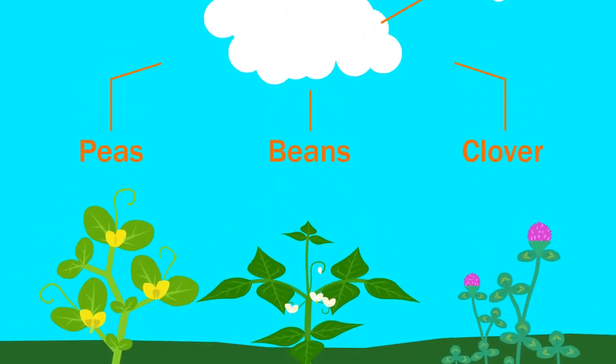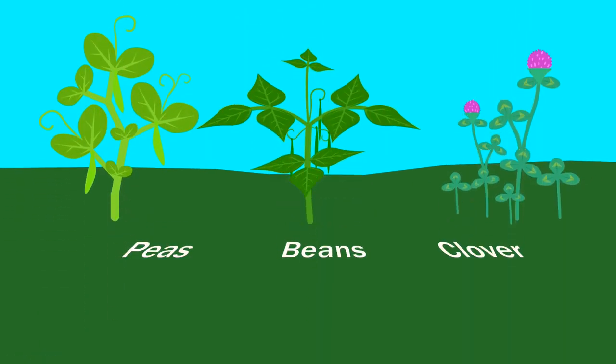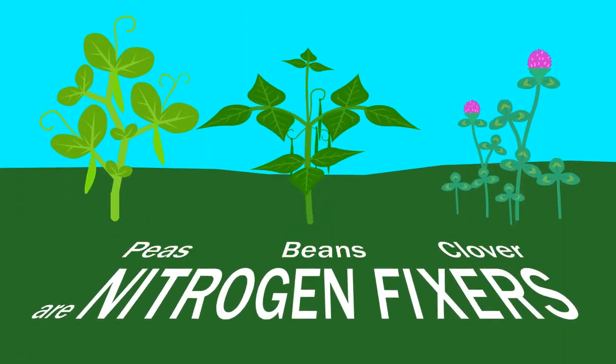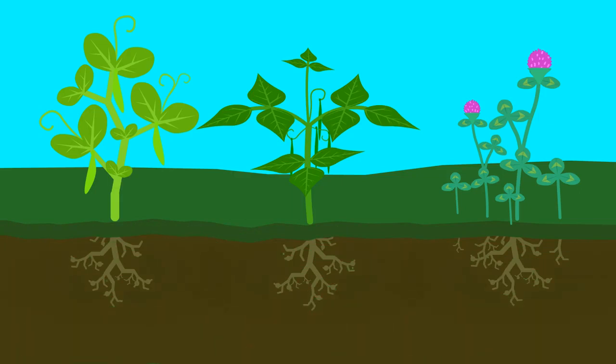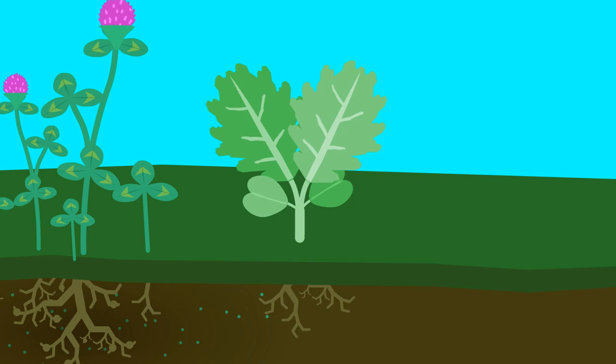Peas, beans, and clover are among the 18,000 species in the pea family. Most species in this family, including these three, are known as nitrogen fixers. They increase the level of nitrogen in the soil, which plants need to produce protein so they can grow and chlorophyll so they can photosynthesize.